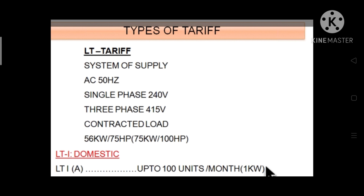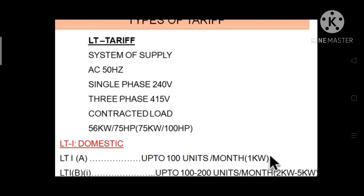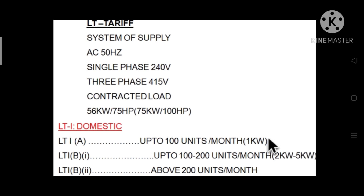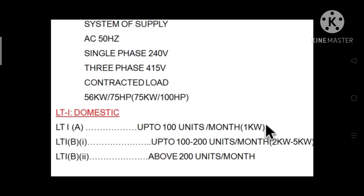There are a total of eight categories in our low tension tariff, and based on those categories the unit charge will be decided. For example, all domestic applications come under the LT1 category, and under LT1 the unit charge is decided — for example, up to 100 units.